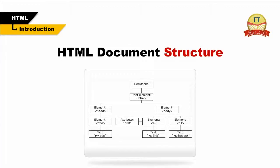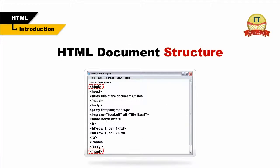HTML document structure. An HTML document starts with an opening HTML tag and ends with a closing HTML tag. These tags tell the browser that the entire document is composed in HTML. Inside these two tags, the document is split into two sections: the head elements, which contain information about the document such as the title and author; and the body elements, which contain the real content of the document that you see on your screen.